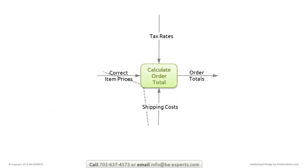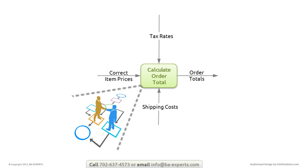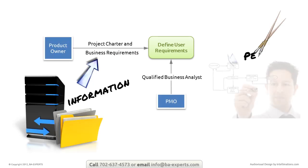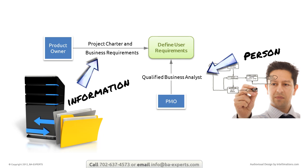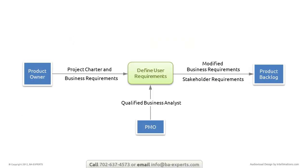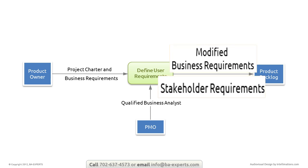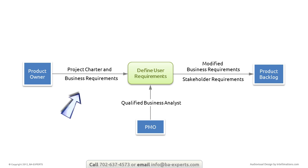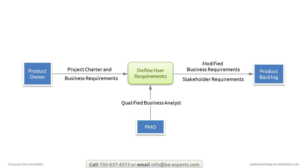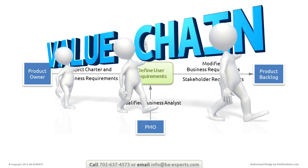Every business process is a more or less complex sequence of steps that changes something coming in to create something new. As such, it needs input, which could be information or any other resource. It uses the input to create output, whether the output is something altogether new or simply an altered version of the original input. Using the input to create the output adds some measurable value to the process. Thus, we often refer to the value chain of the organization.